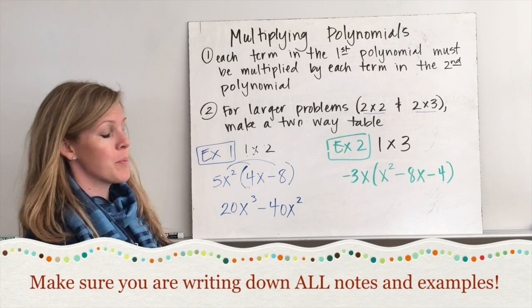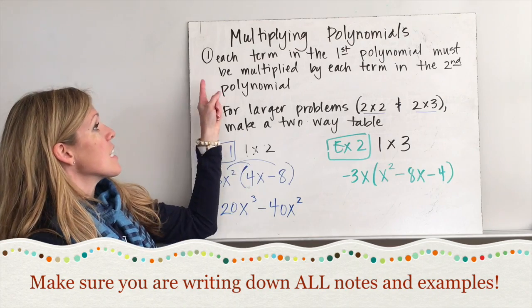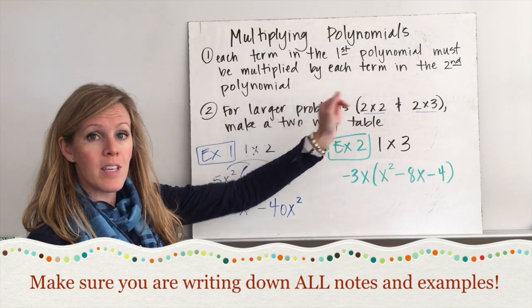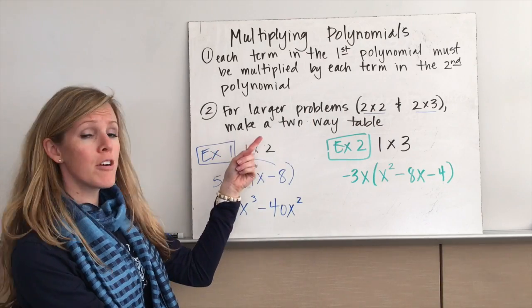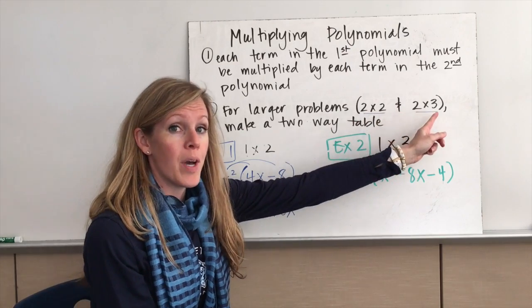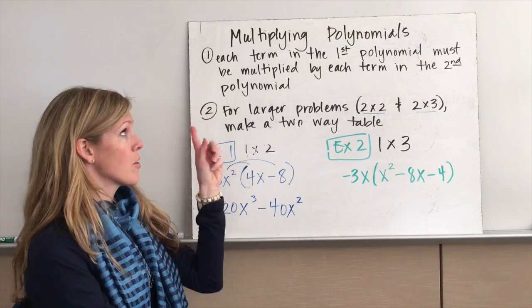Next, we're going to talk about multiplying polynomials. Now, the key with multiplying is that each term in the first polynomial must be multiplied by each term in the second polynomial. For larger problems, if you're multiplying a binomial by a binomial, or even a binomial by a trinomial, you want to make a two-way table to help with this first step.